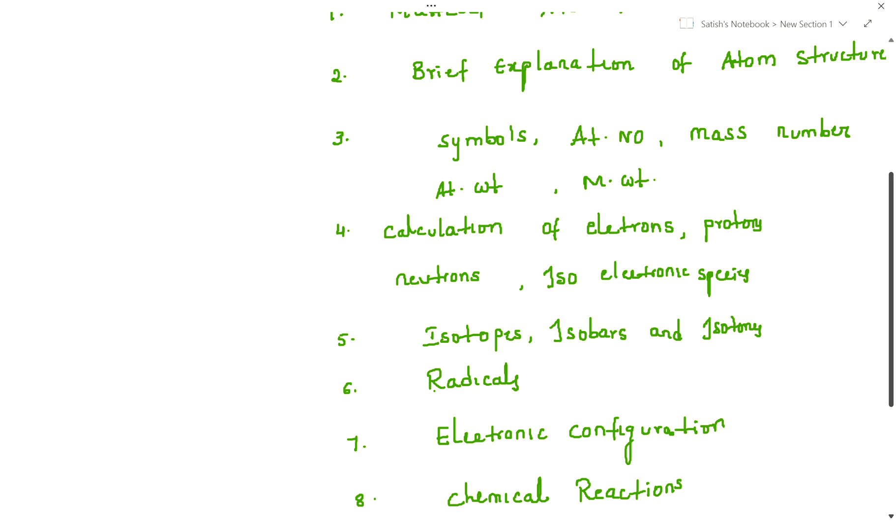I am going to teach the rules first, showing how to write electronic configuration. If you know the third video on symbols, atomic number, and mass number, it's very easy. Especially if you have a good idea about at least 20 elements' atomic numbers, you can very easily write the electronic configuration based on some important rules.